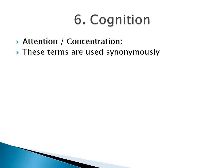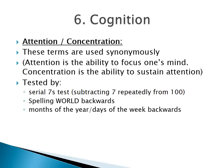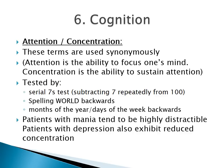Attention and concentration are terms used synonymously. They are tested by the serial sevens test — where the subject is asked to subtract seven repeatedly from 100 — or by asking the subject to spell the word 'world' backwards. If the patient is unable to do those due to poor arithmetic or reading, you can ask them to tell the months of the year or days of the week backwards. Patients with mania tend to be highly distractible, while patients with depression also exhibit reduced concentration and may perform poorly in these tests.